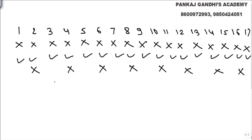The third person is asked to change multiples of 3. 3 was on, he made it off. 6 was off, he made it on. 9 was on, he made it off. 12 was off, he made it on. 15 was on, he made it off. 18, 21, going on.